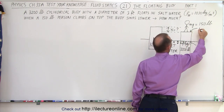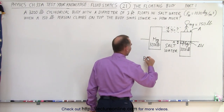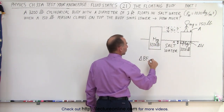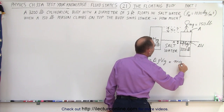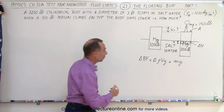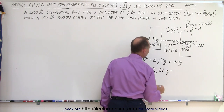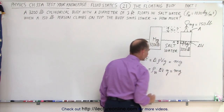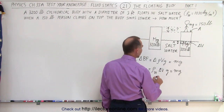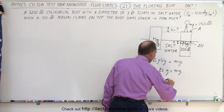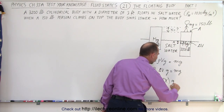We have the cross-sectional area, which can be calculated because we know the diameter. The additional buoyancy force required to support the person is equal to the additional rho times V times g, which equals the weight of the person. What's changing here is the volume. So that would be the density of the liquid times the change in volume times g, equal to the mass times g — or the weight of the person. The change in volume would be the cross-sectional area times the change in height, which is x. So we have: density of water × x × A × g = m × g.